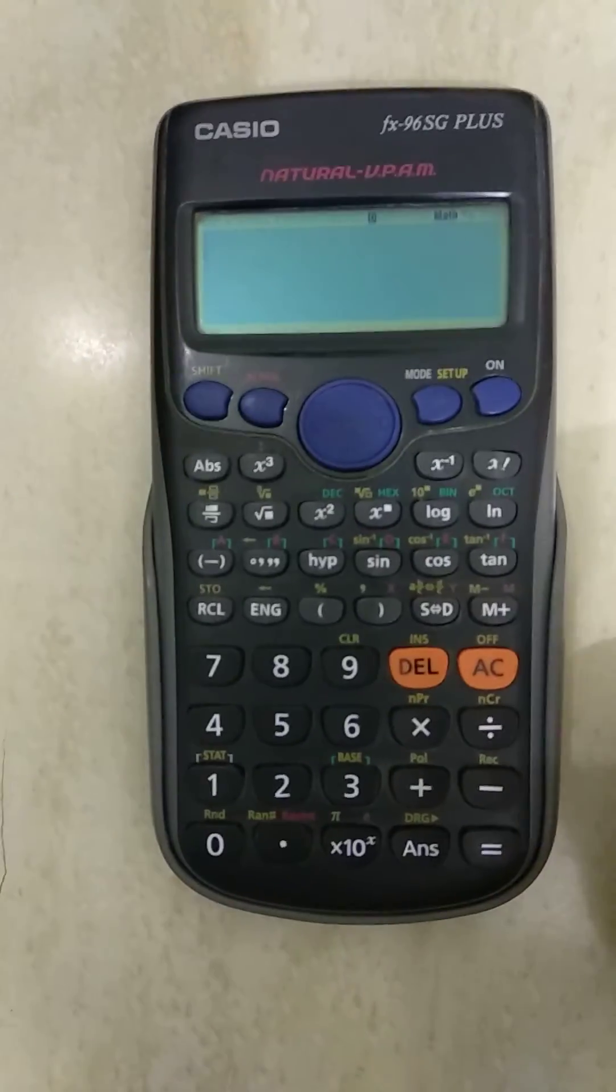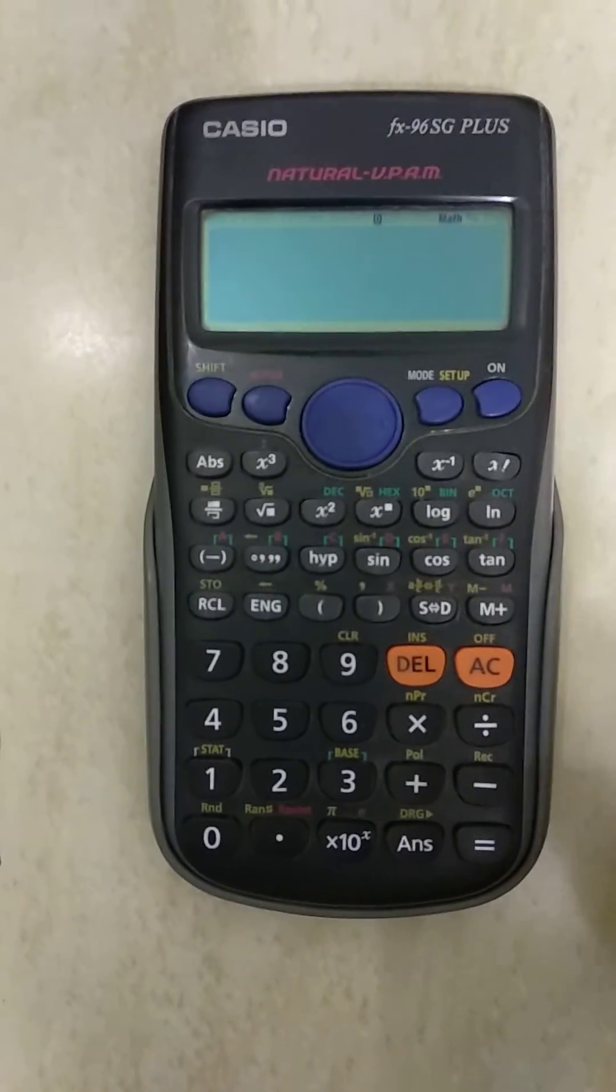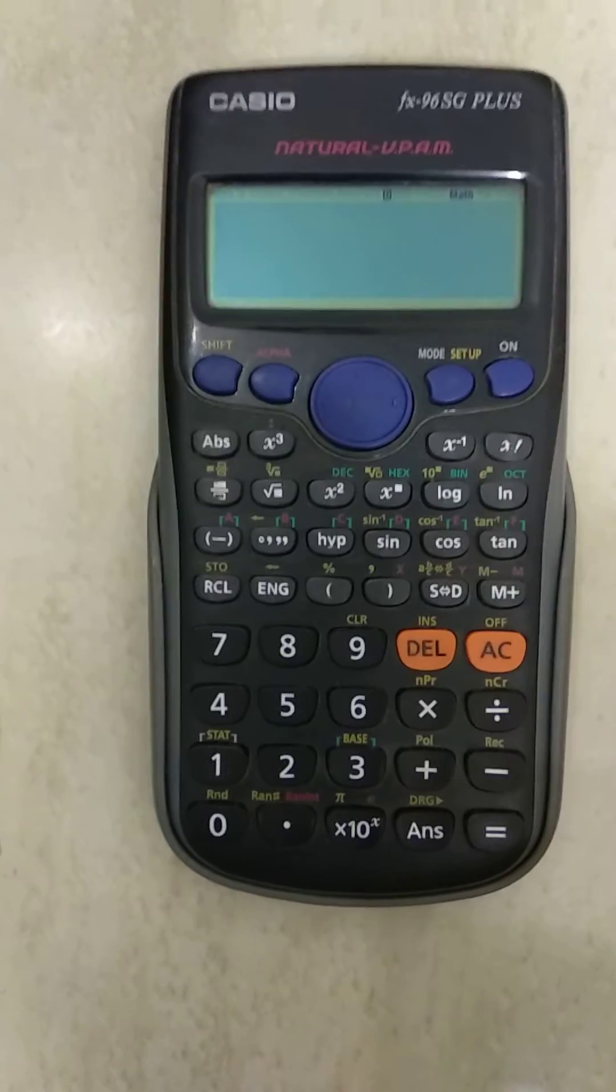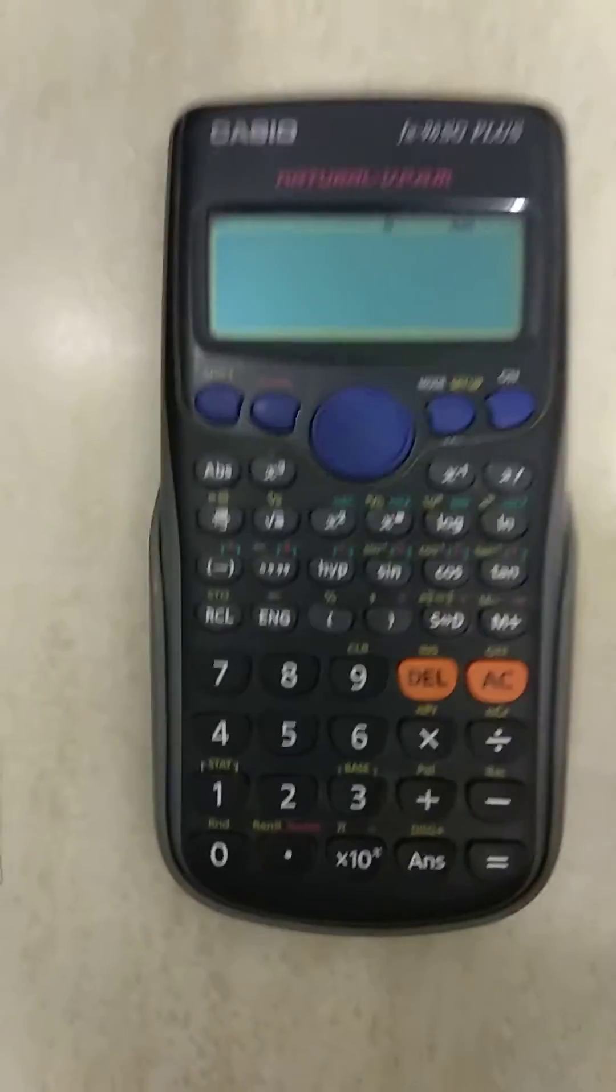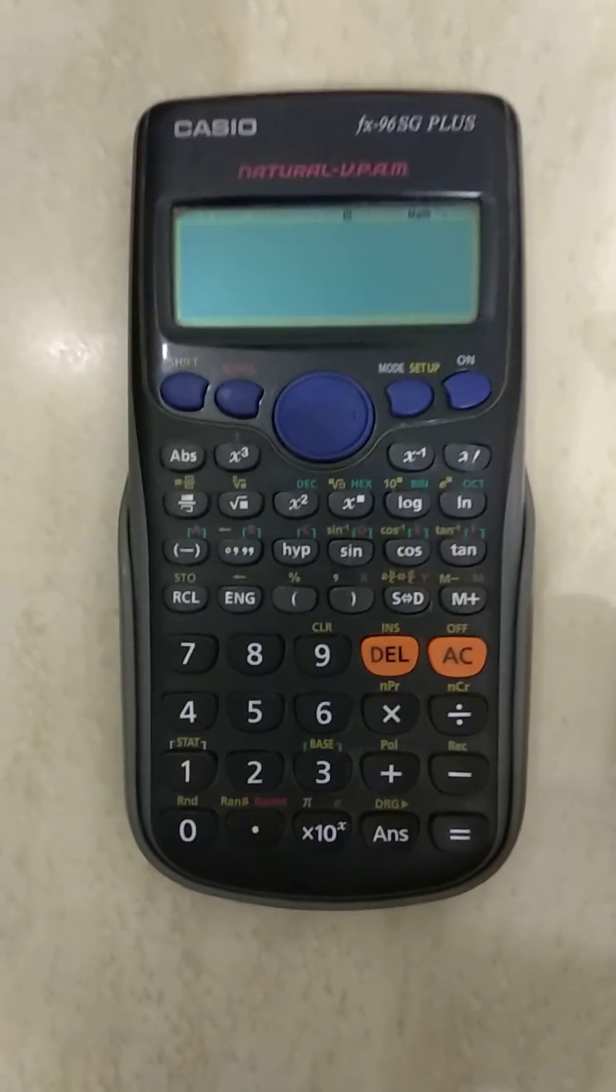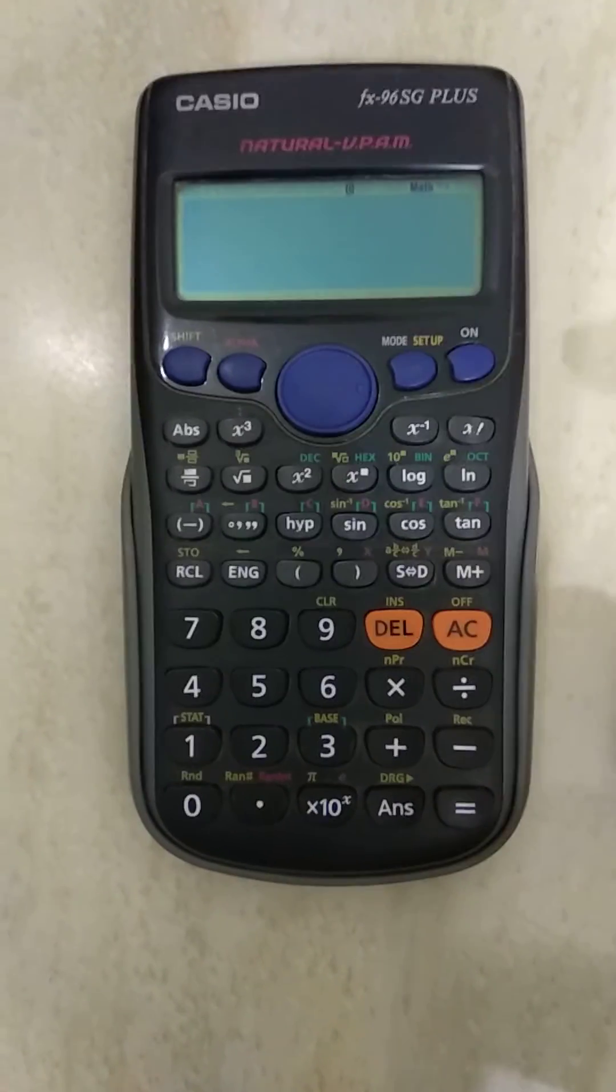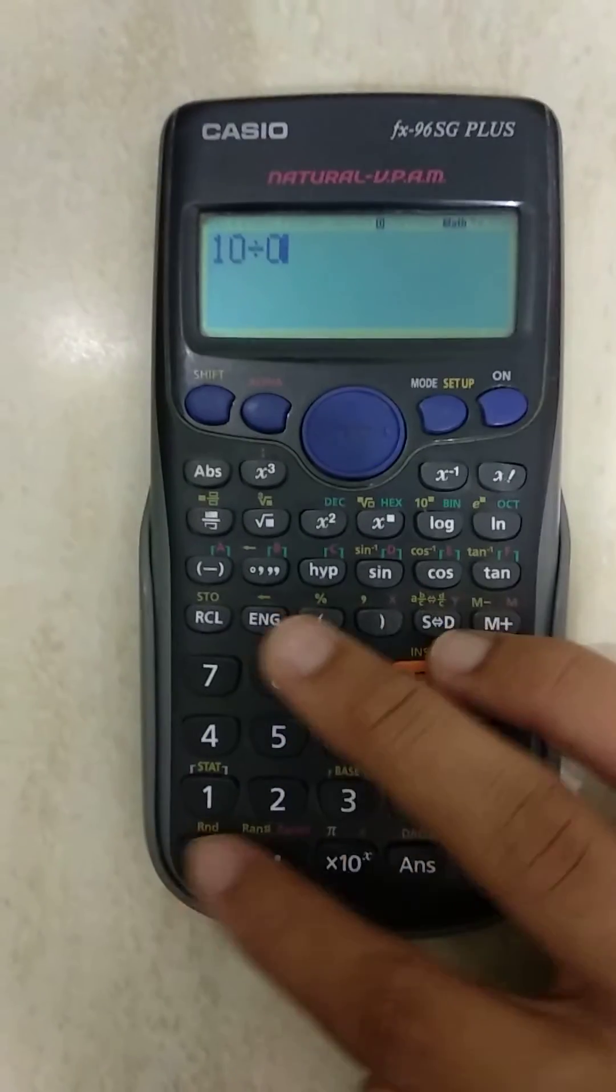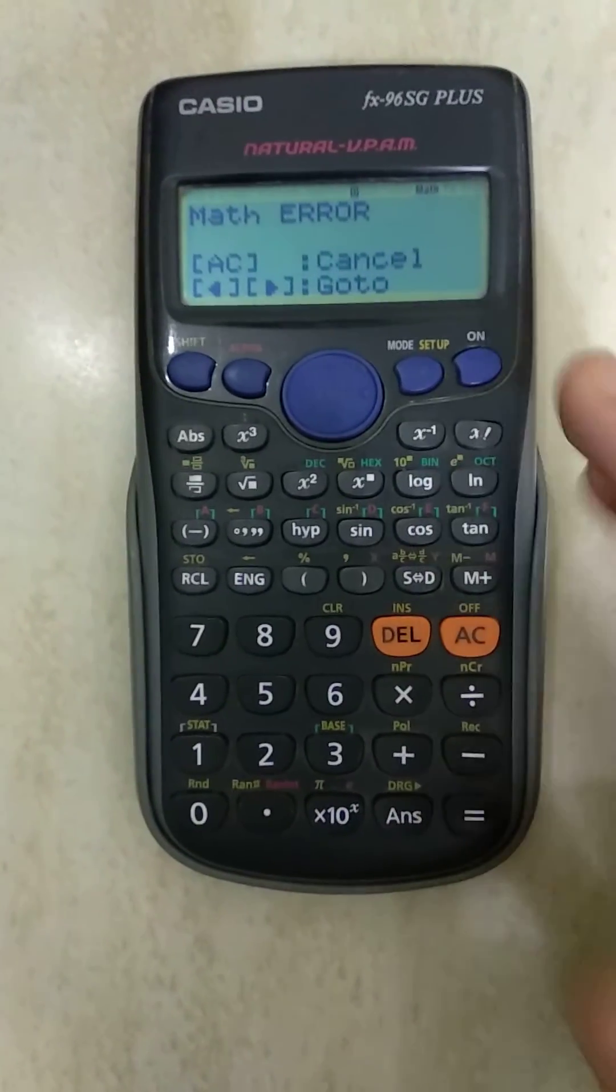The third and final error we're going to perform is the maths error. This error is performed when it's basically mathematically not possible. For example, a simple example would be when we divide 10 by 0. As nothing can actually be divided by 0, 10 divided by 0 gives us the maths error.